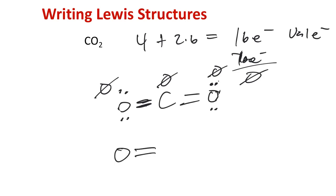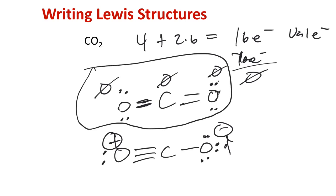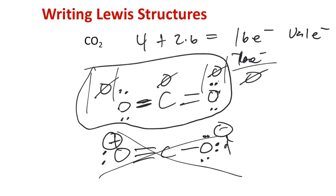One thing to consider is why we rule out an alternative Lewis structure where one O has a minus formal charge and the other O has a positive charge. In general, we should choose a Lewis structure that minimizes formal charges when possible. If we're satisfying the octet rule equally in both structures, we choose the one that minimizes the magnitudes of formal charge on the molecule.